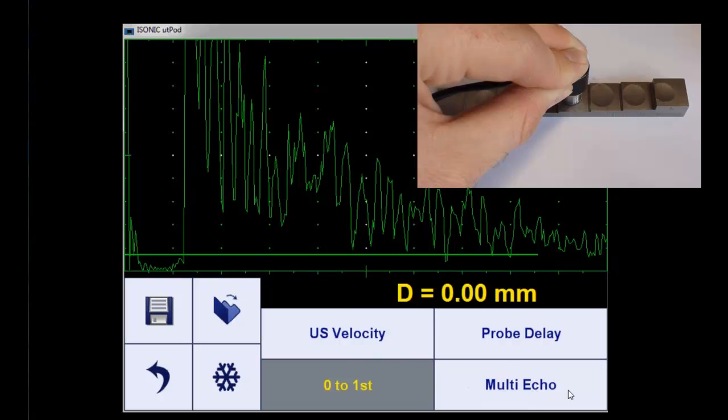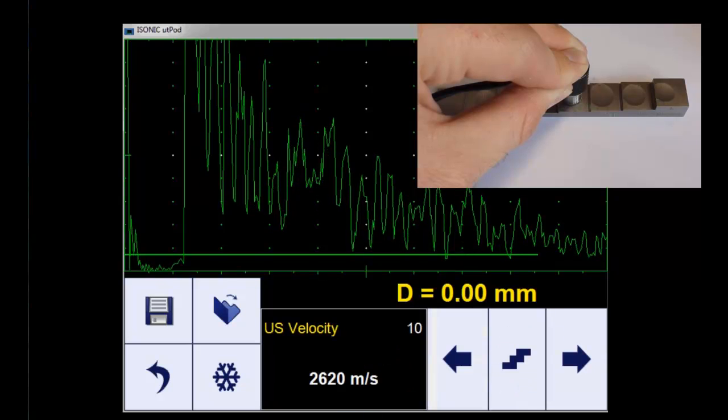Multi echo mode is for measuring through coating or paint, where we are only interested in the base material thickness. The thickness of the paint or coating layer will be automatically eliminated. Here we concentrate on zero to first measurement, so we choose that now.